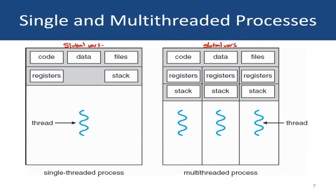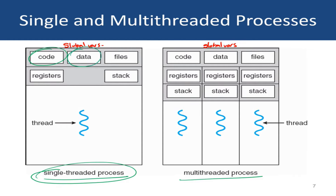This picture illustrates the difference between traditional single threaded processes and multi-threaded processes. Let's start with the single threaded process. Recall that every process has some program logic which is part of its code section. The process also has a bunch of data in its data section — for example, global variables and data constants. It may also be using some system resources, like several files open on the hard disk. The program stack is used for keeping track of function calls, return values, and local variables.